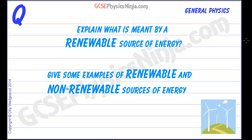We need various energy sources to generate electricity, to heat homes and fuel various transport around the planet. And these energy sources come in two varieties or two families: renewable and non-renewable.